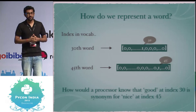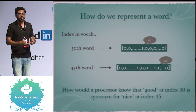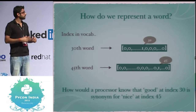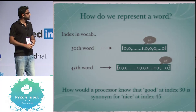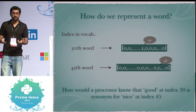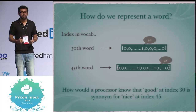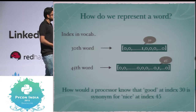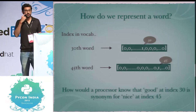How do we represent a word? Suppose we build indexes: if we have a vocabulary and there's a word 'nice' at the 30th index, we create a one-hot vector — zeros everywhere and a one at position 30. So the dimension of the vector equals the size of the vocabulary. If 'nice' is at position 30 and 'good' is at position 45, with this representation we cannot say these two words are actually the same. The main problem is our word representation does not convey any information about that word. We calculate information about a word only through its surrounding neighborhood words.